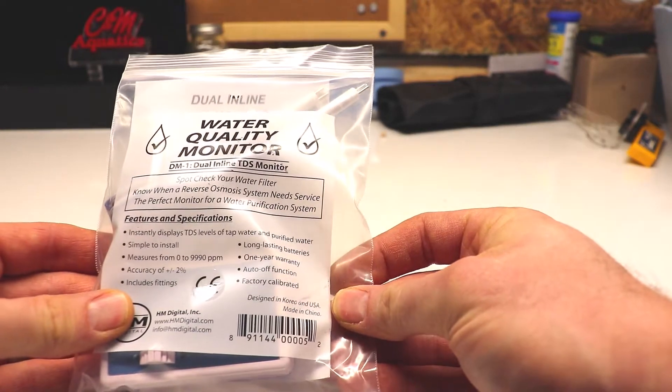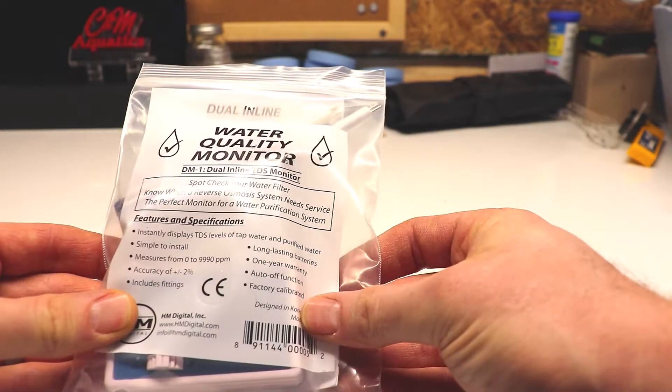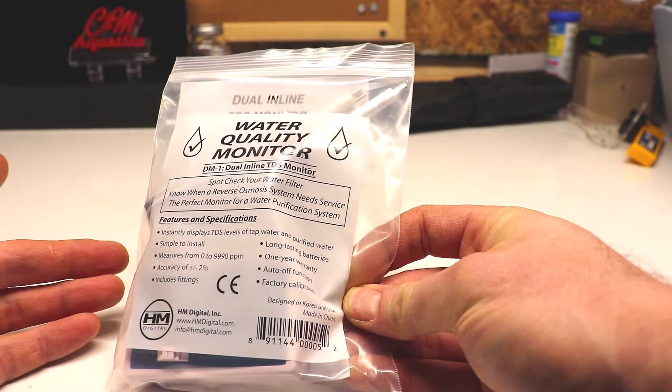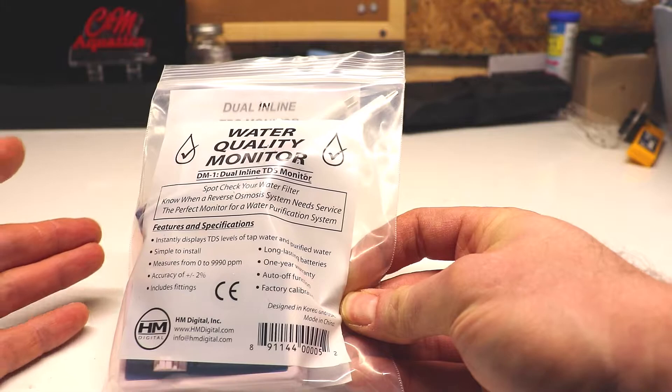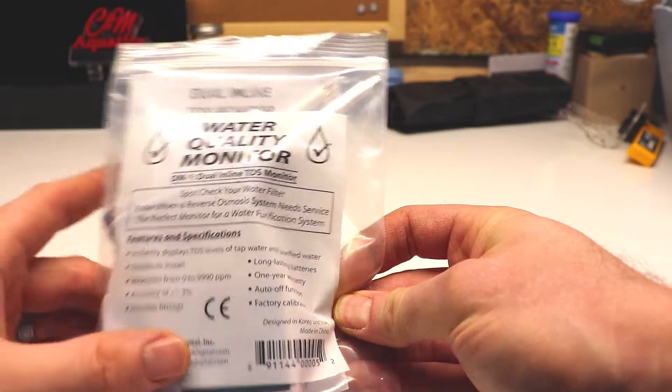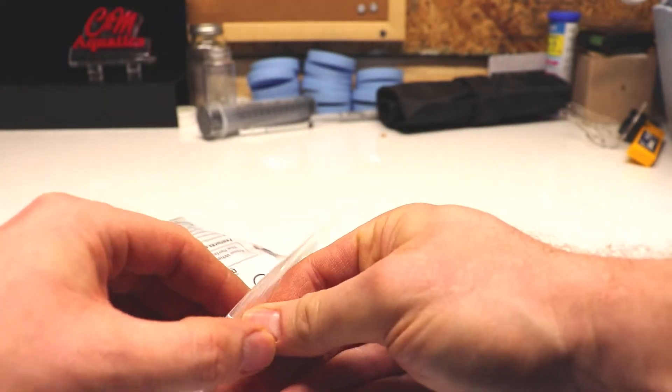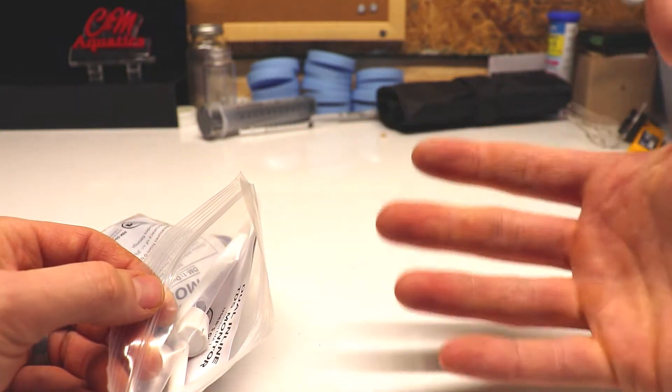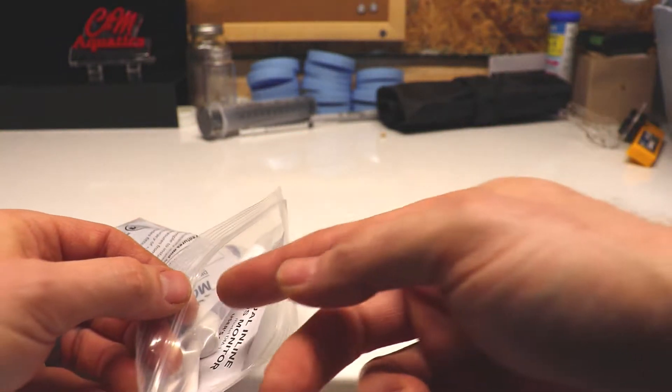Today I'm going to talk about TDS meters. I got a TDS meter for my RODI filtration unit. What it does is it measures the total dissolved solids in your water, so it will tell you when you need to replace your cartridges on your RODI filter.